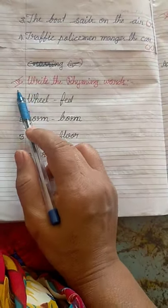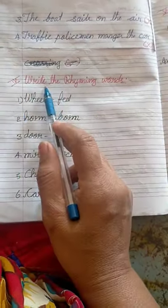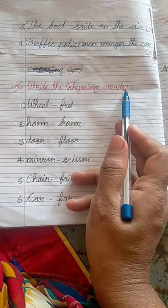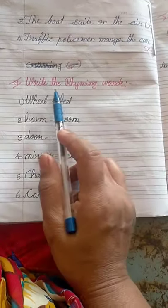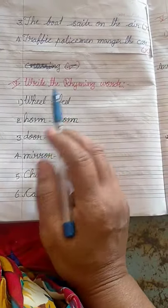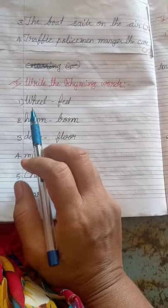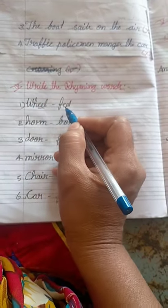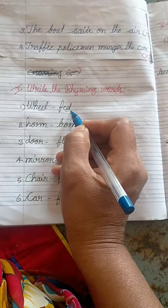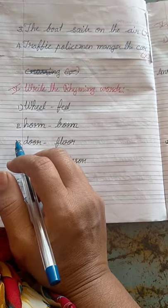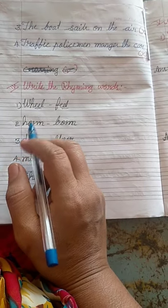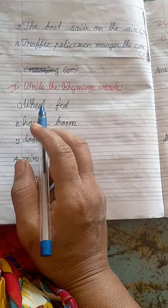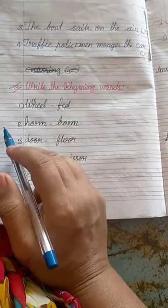Next, go to the fourth section: write the rhyming words. Rhyming words are those where two or three letters are the same, or the last phonics sounds are the same. These are called rhyming words.